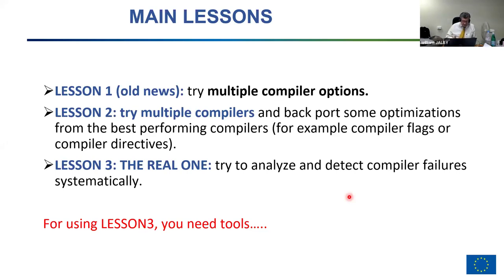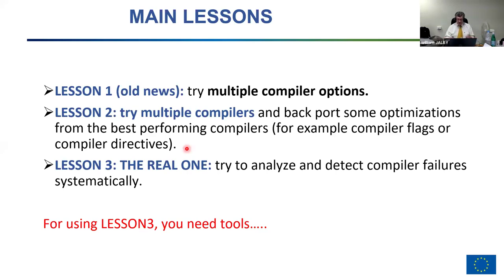The main lessons from this example: first, try multiple compiler options — you all know that. Second, and less obvious, we discovered the issue with AOCC only because we also tried ICX. So we should try multiple compilers — even if your favorite is AOCC, it's always worth trying ICX. The real lesson is that we need tools capable of analyzing and detecting compiler failures, such as AOCC failing to inline the library correctly.